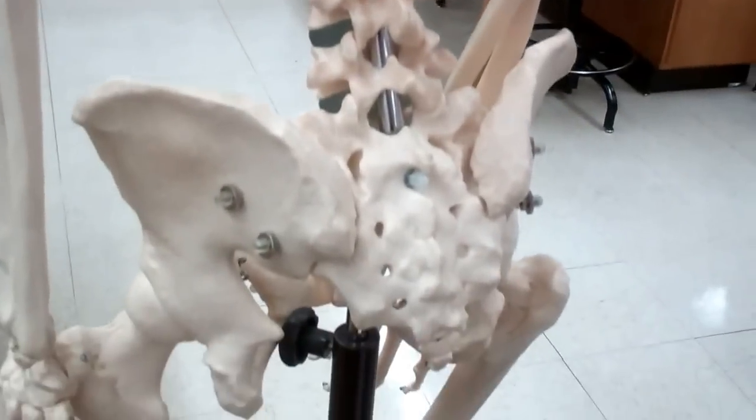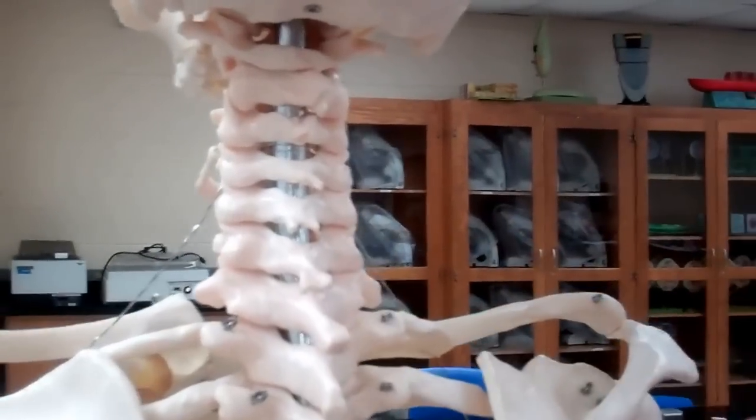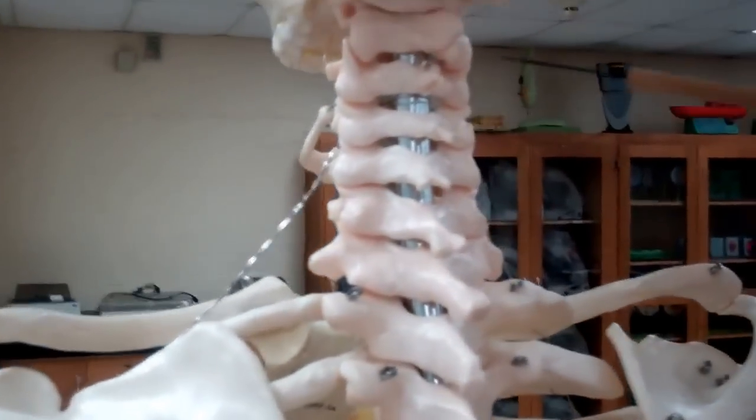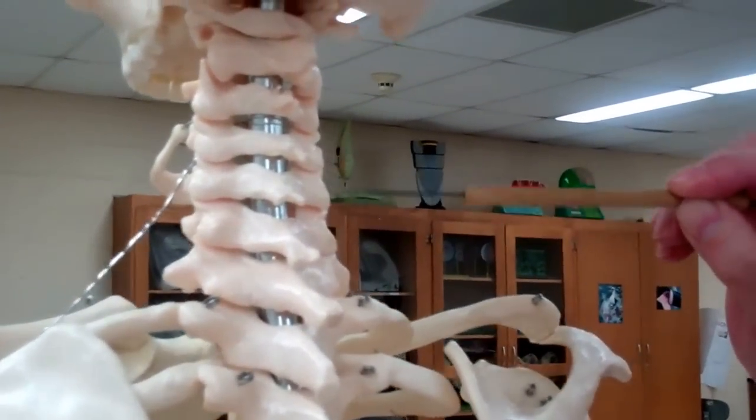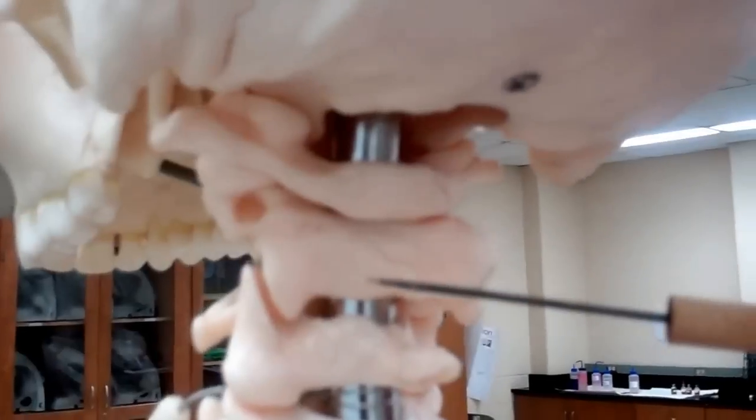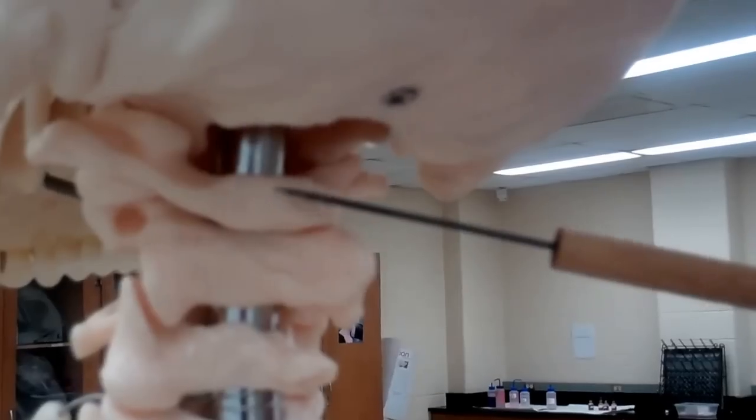We are going to be looking at the rest of the axial skeleton in this video, starting with our vertebral column. There are seven vertebrae in the cervical region. These are called the cervical vertebrae. Up here at the top we have two special cervical vertebrae: our atlas and our axis, or C1 and C2.